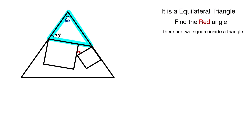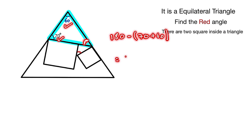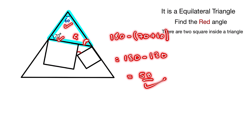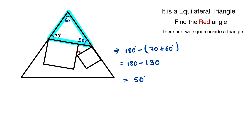First, we look at this triangle. This angle is 20 degrees and this one is 60 degrees. We now find the third angle: 180 minus (70 plus 60) equals 180 minus 130, which equals 50 degrees. So this angle is equal to 50 degrees.